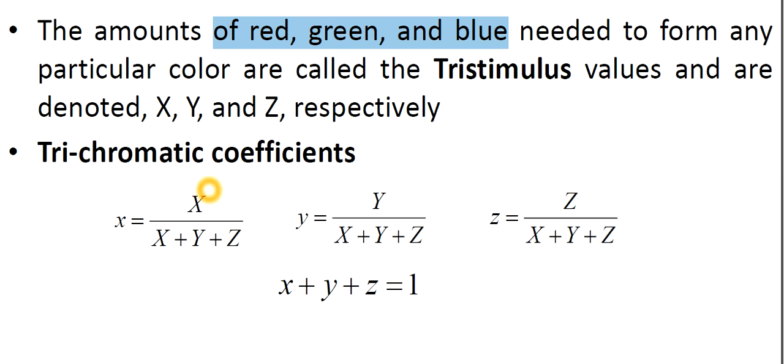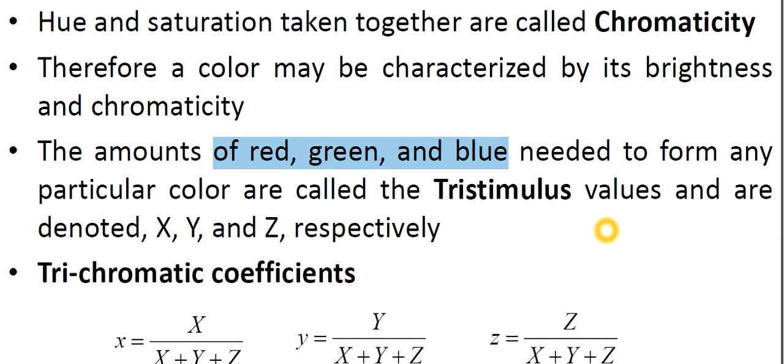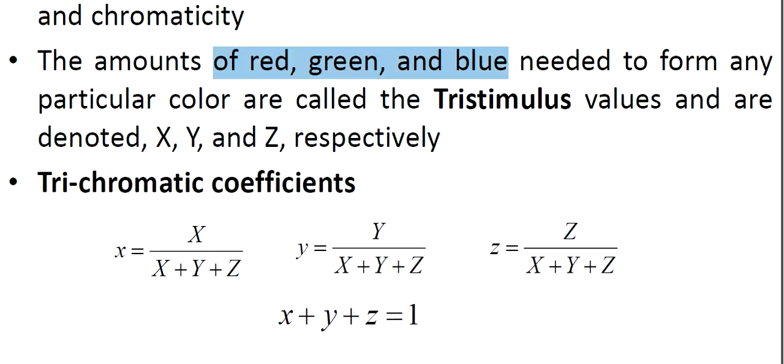We have the formulas as capital X, Y, Z to denote them. So x is equal to capital X divided by X plus Y plus Z, y is equal to Y divided by X plus Y plus Z, and z is equal to Z divided by X plus Y plus Z. And when we add all of them, x plus y plus z, we will get one. Tristimulus values is very important to you, and combining them will get different colors.